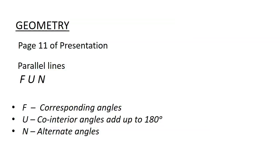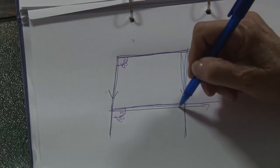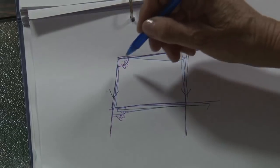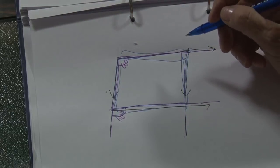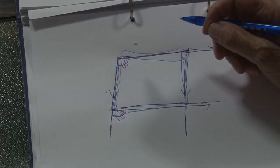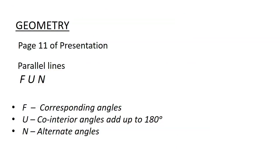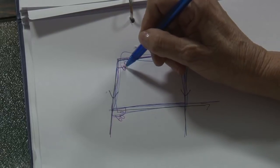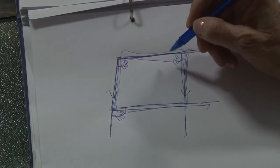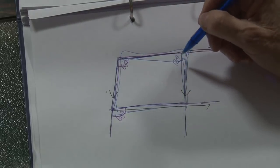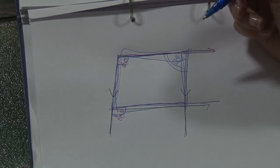The U stands for co-interior angles. You can see a U in the diagram. The U tells you that co-interior angles add up to 180 degrees. So if this one is 60 degrees, 180 minus 60 gives 120 degrees — that angle plus this one gives 180 degrees.